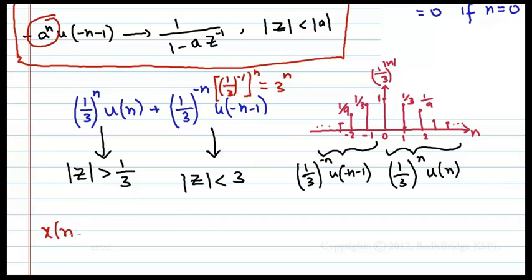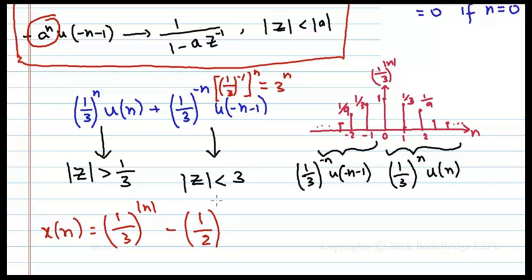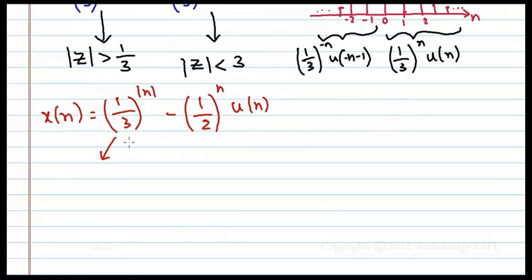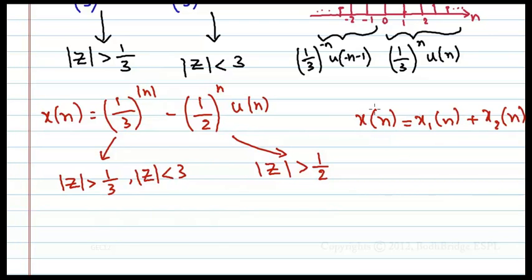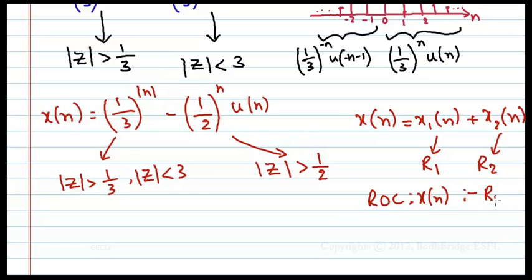Now x(n) = (1/3)^|n| - (1/2)^n · u(n). The ROC of (1/3)^|n| is |z| > 1/3 intersected with |z| < 3. For the term (1/2)^n · u(n), using a^n · u(n), the ROC is |z| > 1/2. The final ROC is the intersection of all these ROCs. If x(n) = x₁(n) + x₂(n), then the ROC of x(n) is R1 ∩ R2.